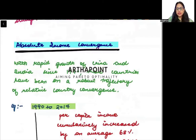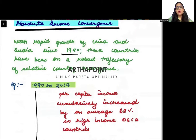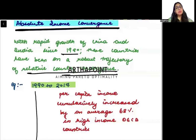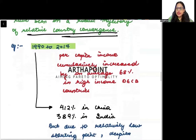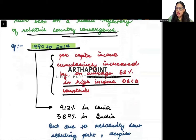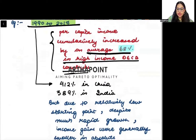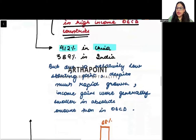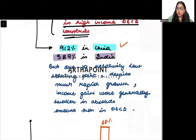With the rapid growth of China and India since 1990, these countries have been on a robust trajectory of relative convergence. Since the majority of the world's population is in India and China, and they grew rapidly, from 1990 to 2017 per capita income cumulatively increased by an average of 68% in high-income OECD countries, but increased by 412% in China and 389% in India.